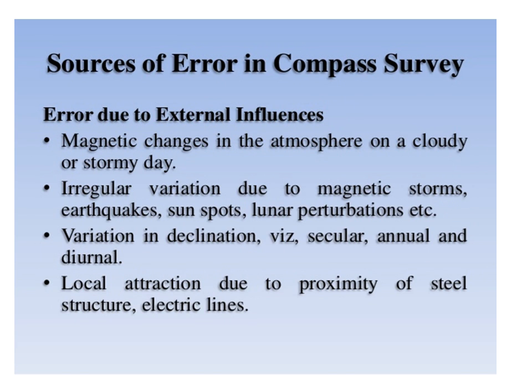The next type of source is error due to external influences. It includes magnetic changes in the atmosphere on a cloudy or stormy day; irregular variation due to magnetic storms, earthquakes, sunspots, and lunar perturbation; variation in declination that is diurnal, annual, and secular; and local attraction due to proximity of steel structures, electric wires, or lines.